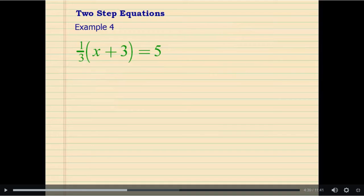Here is another example with two-step equations. In this case, we are going to undo everything that was done to the variable using reverse order of operations. x was added by 3, and then the sum was multiplied by 1 third. So we are going to undo the 1 third first and then take care of the 3.